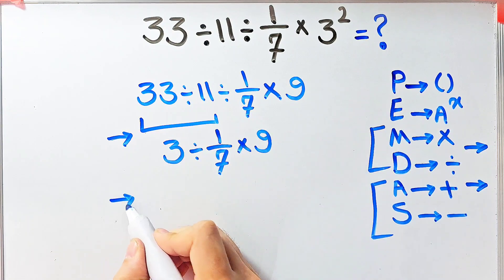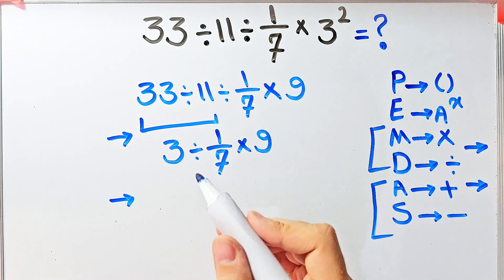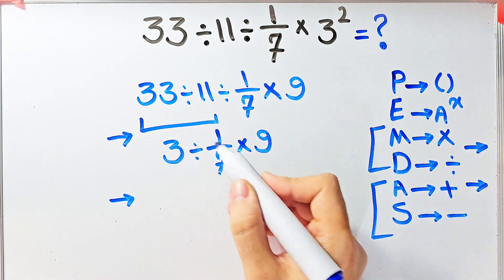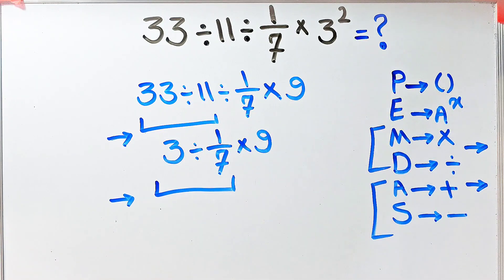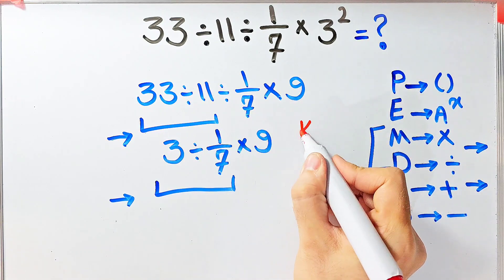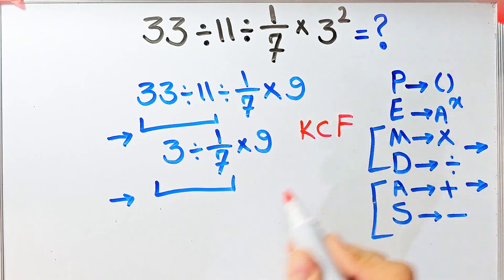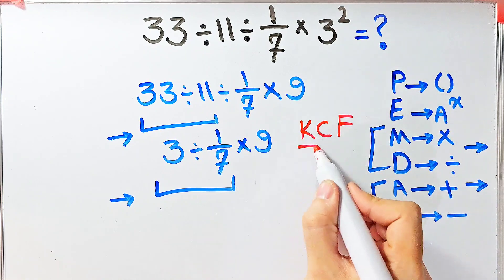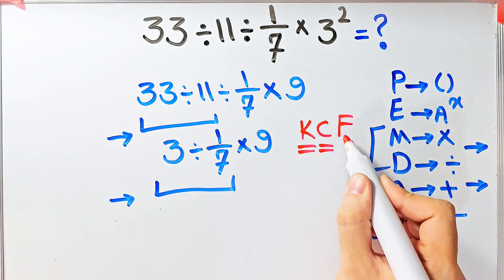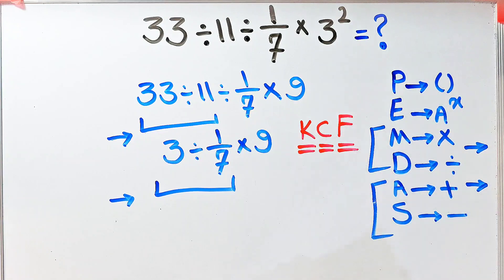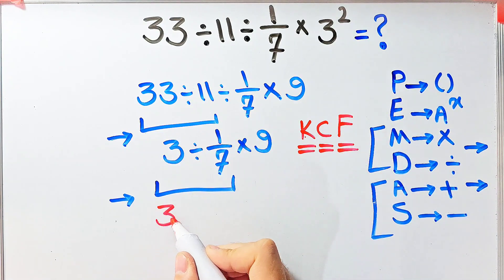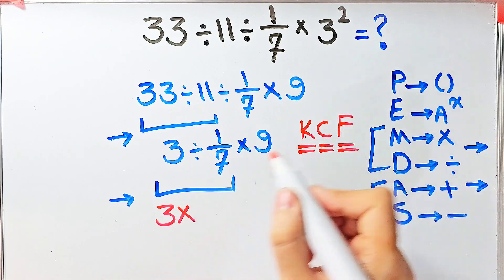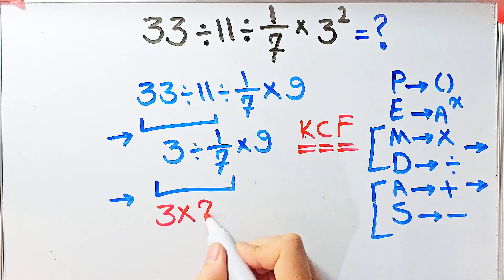In the first part we have a number divided by a fraction. To solve this we need to follow the KCF rule. K stands for keep, C stands for change, and F stands for flip. We keep the first number as it is, then we change the division sign to a multiplication sign, and then we flip the second fraction.